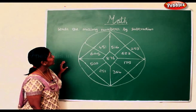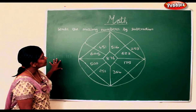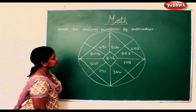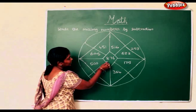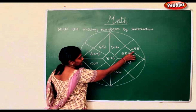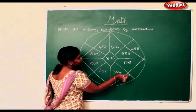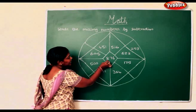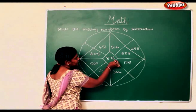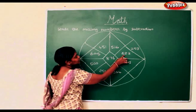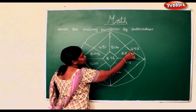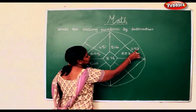Now we shall write the missing numbers by using subtraction. The first one has already been done for you: 876 minus 623 gives you 253.